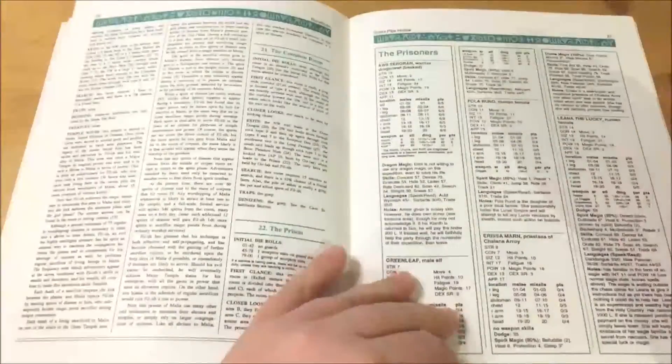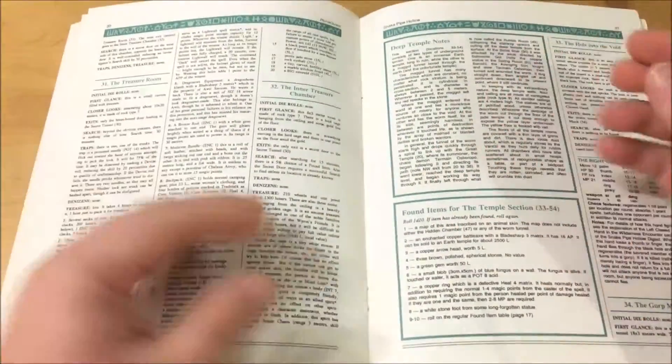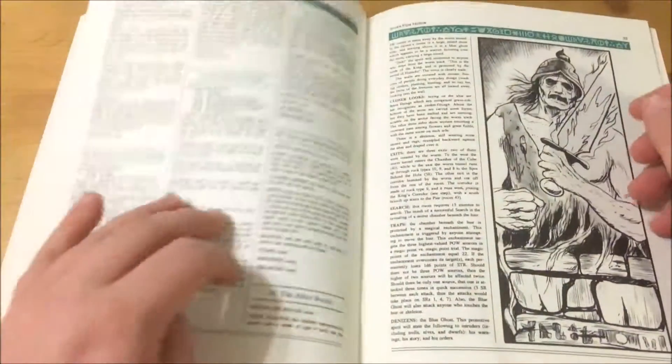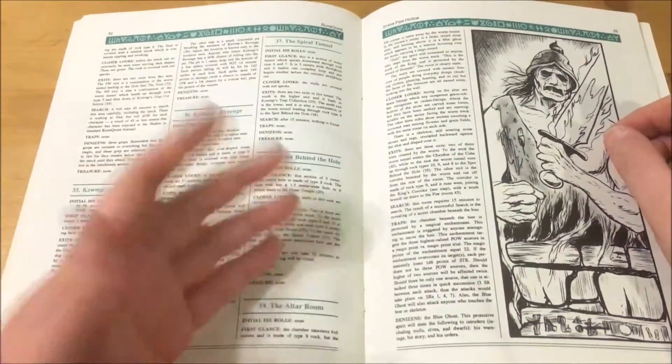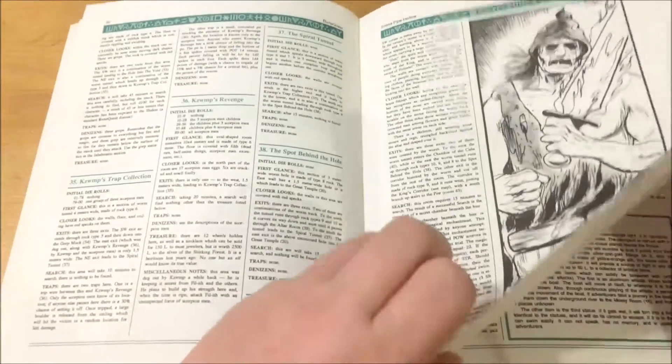Then there's the inner caves which contain very dangerous foes such as Phyllis, a Broo priest of Malia and his foul herd, as well as a large number of bound disease spirits that do his bidding and the horrific temple they've built. There's a small but powerful group of scorpion men and even a basilisk.